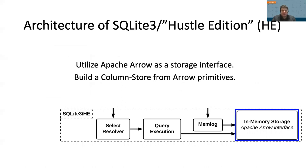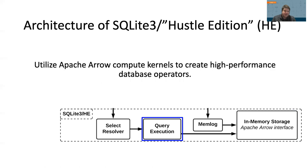First, we utilize a secondary copy of the data that is always resident in memory. This is accomplished via Apache Arrow, which provides primitives that can be used to build a columnar storage layer in our acceleration path, allowing for significantly faster record retrieval. By structuring records in a columnar format, we naturally align our storage layer with the queries to be accelerated. Apache Arrow also provides high-performance compute kernels geared towards vectorization and single instruction multiple data use cases, providing a high-performance starting point for implementing our own database operators.